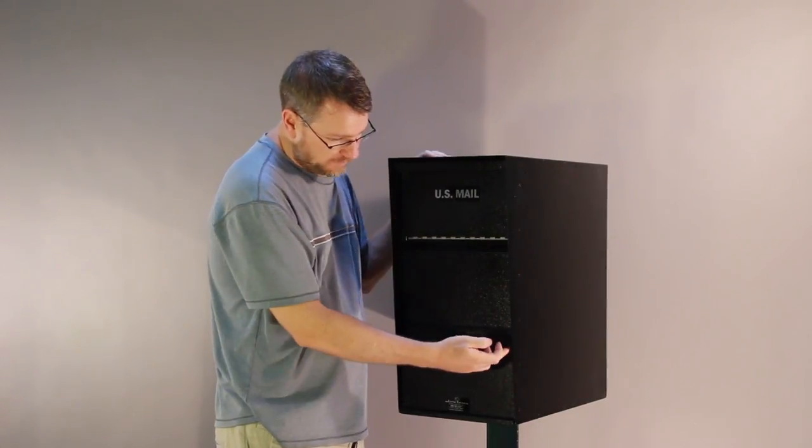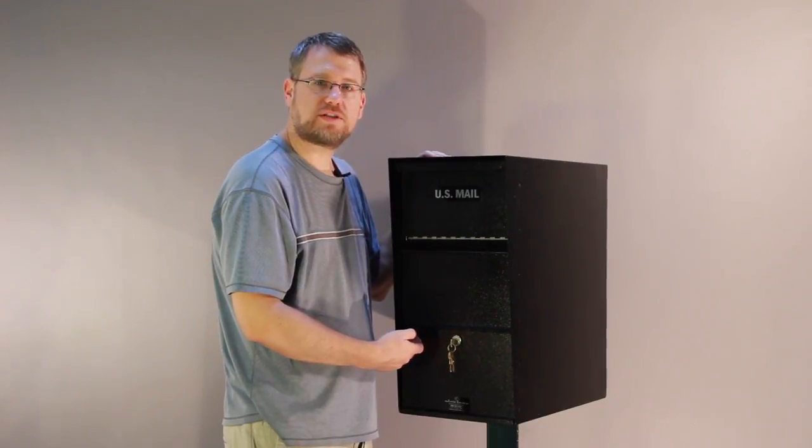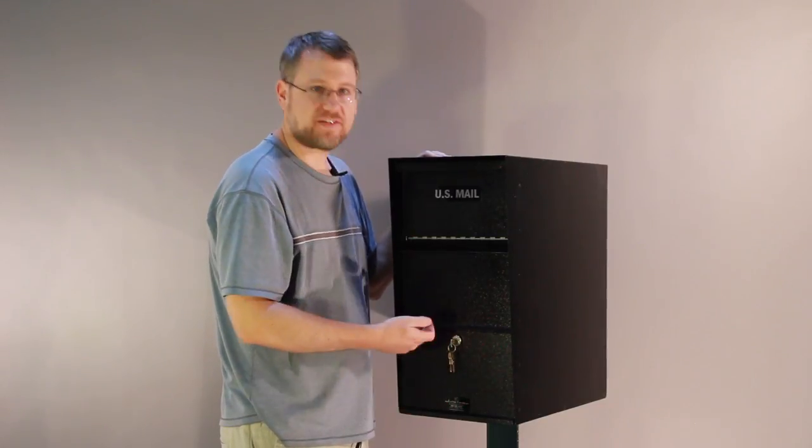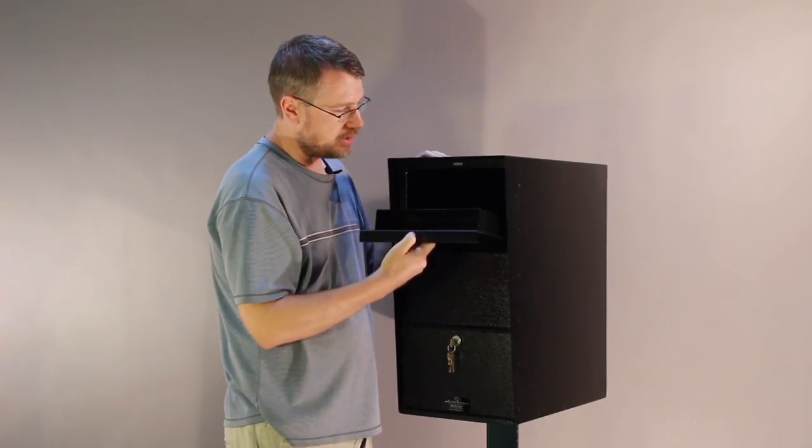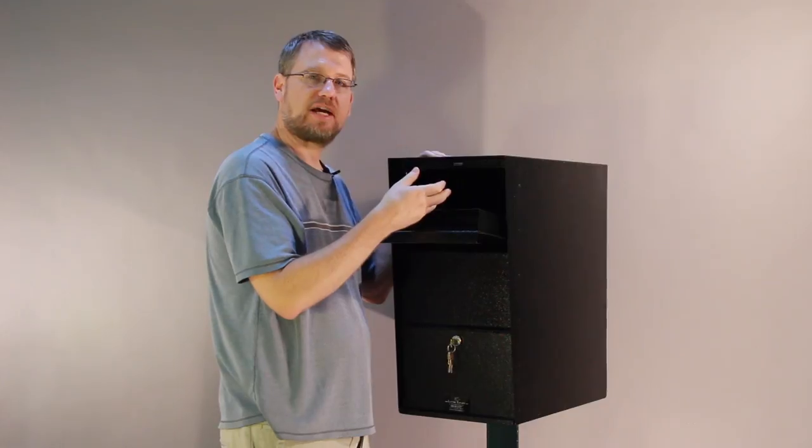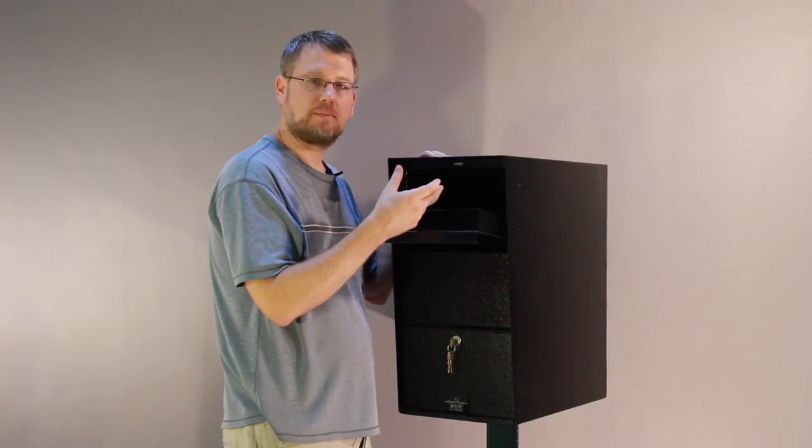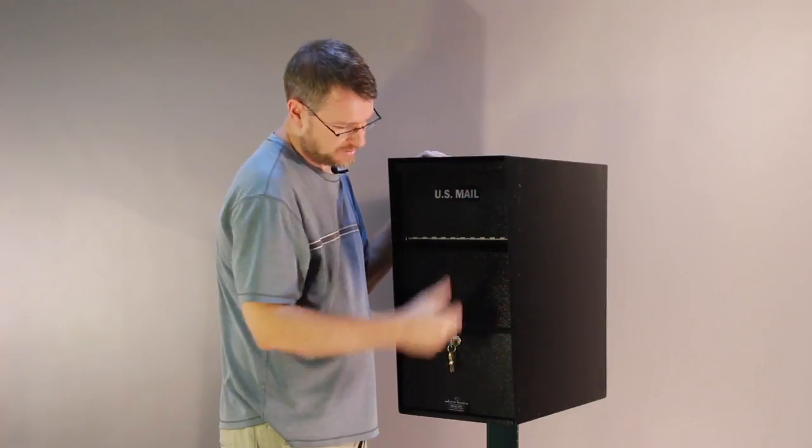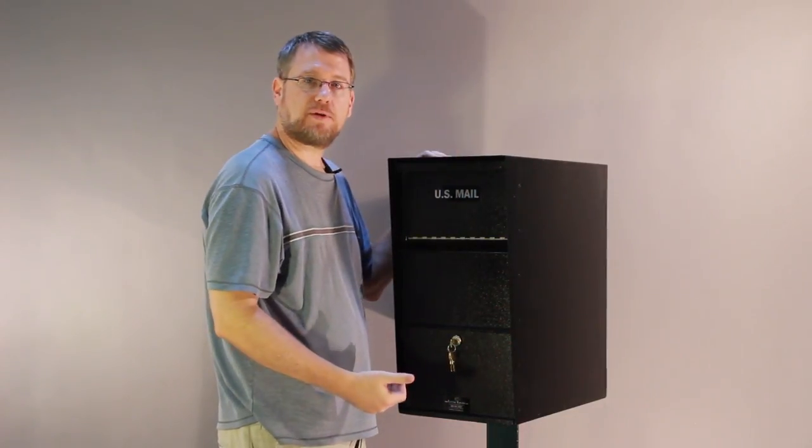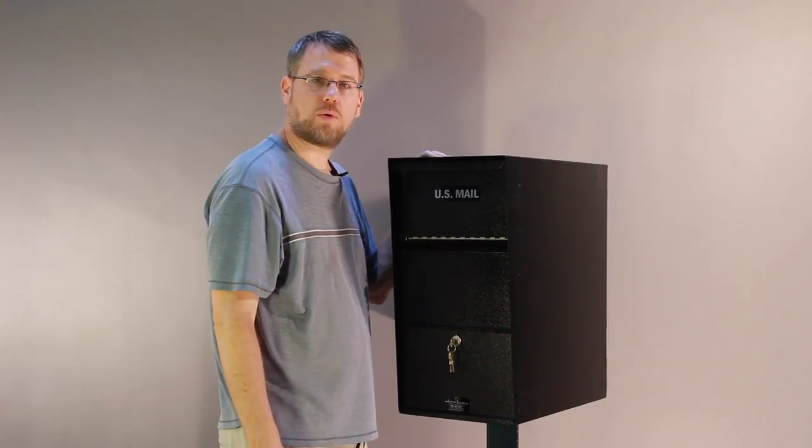The retrieval door is 11 and three quarters wide and seven and a half inches high. So that allows you, if you have small parcels that are dropped in there, such as a box of checks or DVDs or prescription drugs, whatever drops in there, it's going to easily be retrieved out the retrieval locked door.